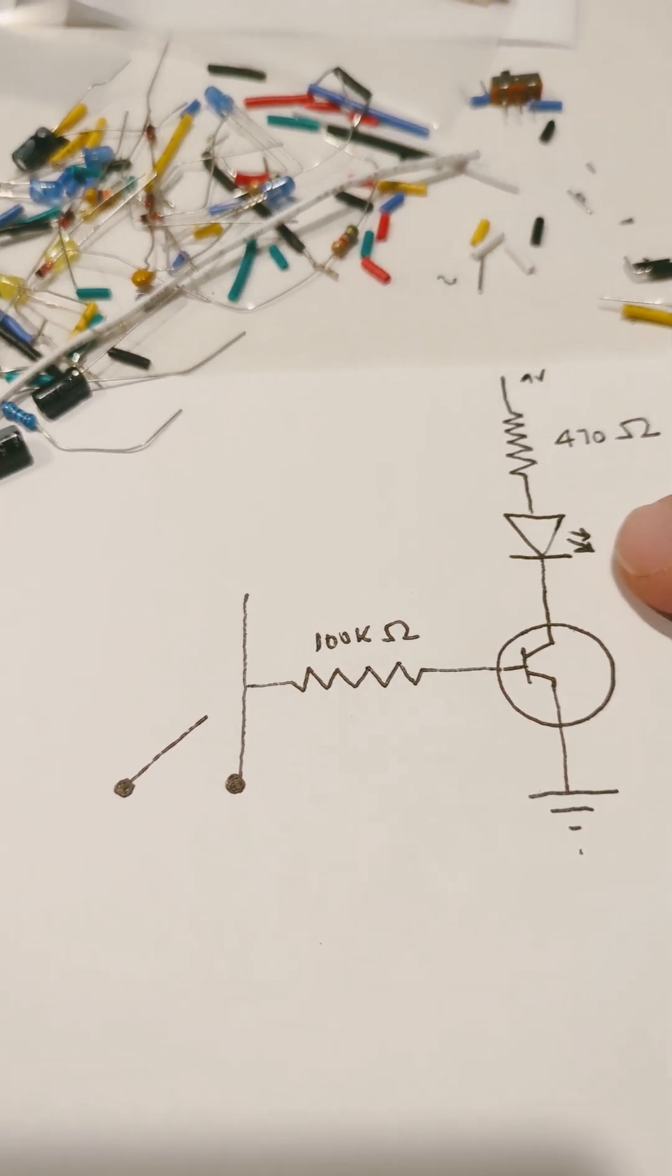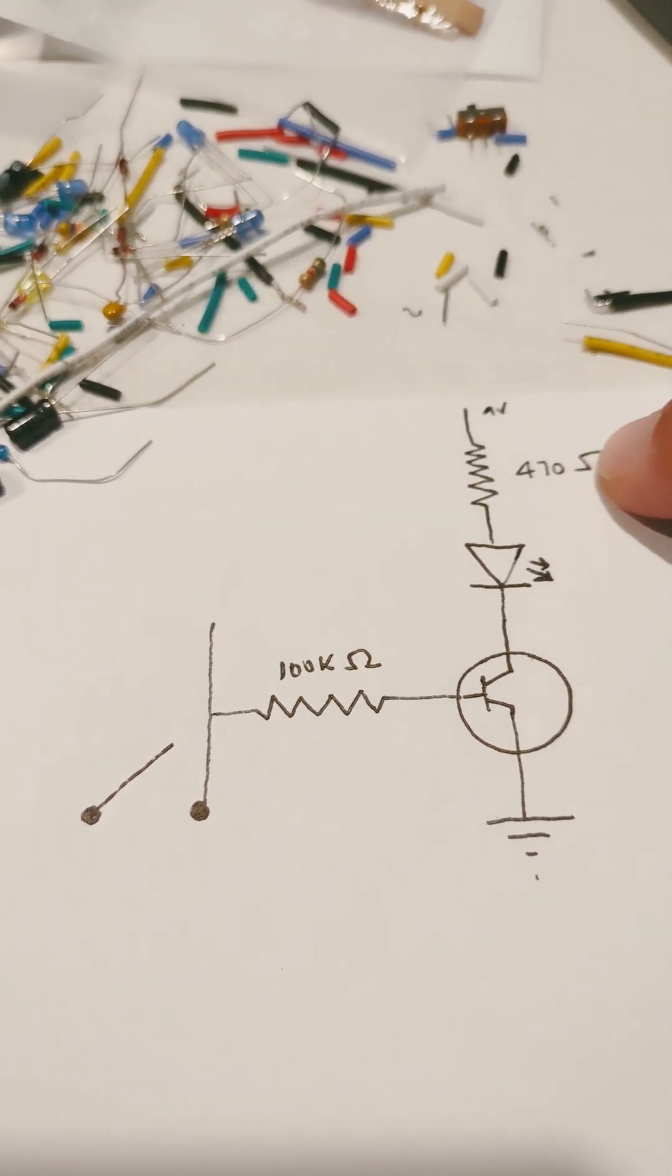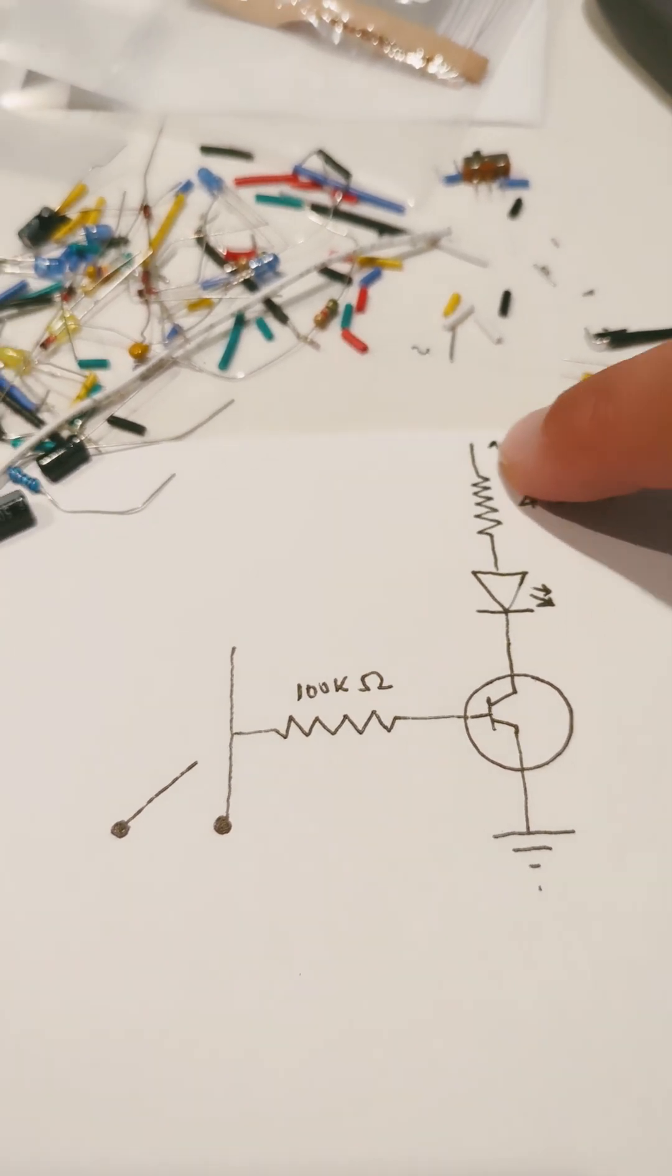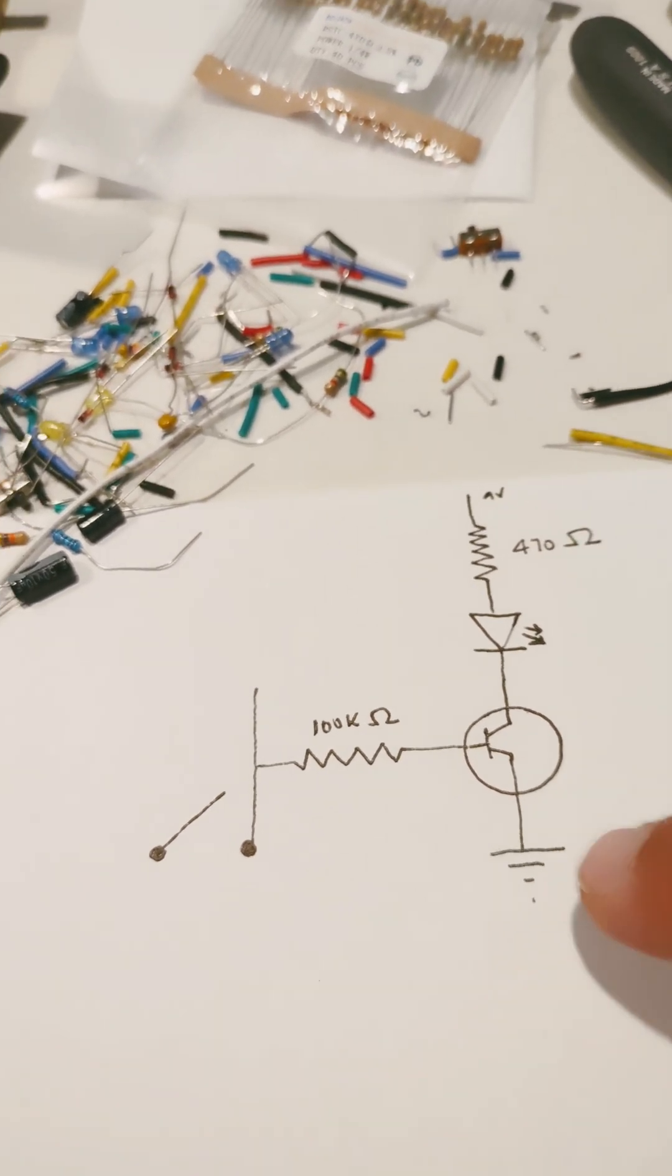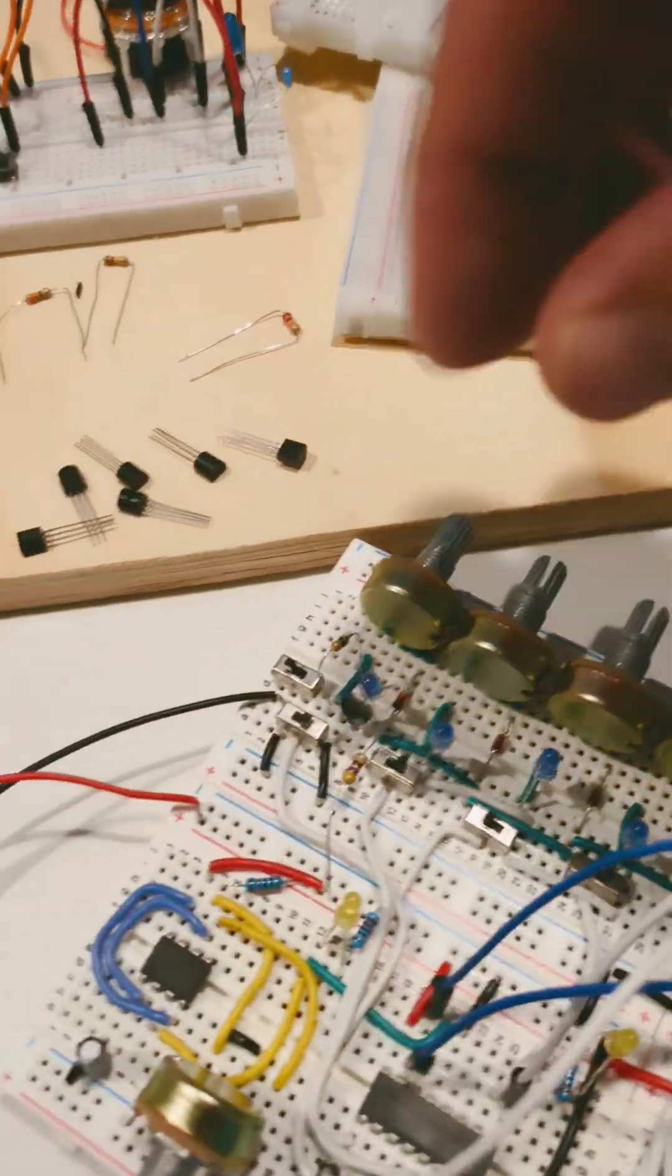The collector goes through an LED to a 470 ohm resistor to 9 volts. This resistor is just to protect the LED. The emitter goes to ground, and now that transistor drives the LED instead of the chip.